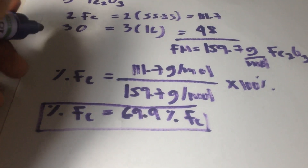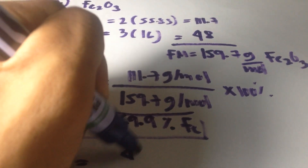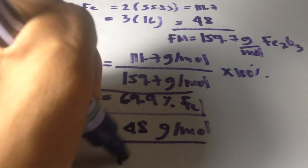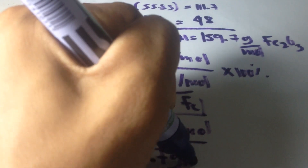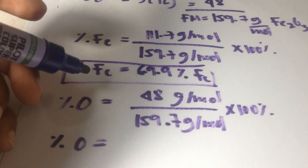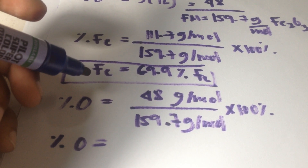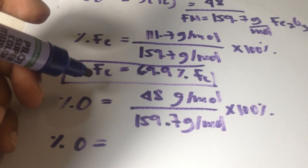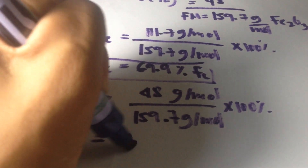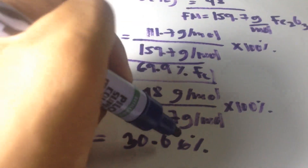And how about the percent of oxygen? The percent of oxygen is equal to 48 grams per mole divided by 159.7 grams per mole, times 100%, which gives 30.06% oxygen.